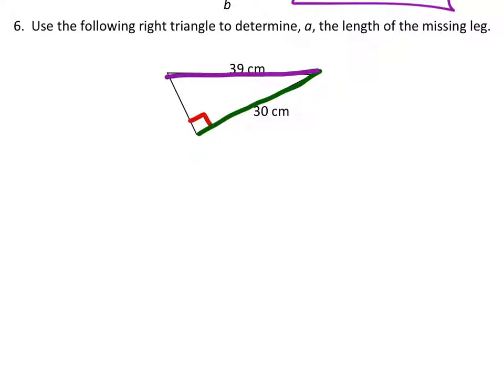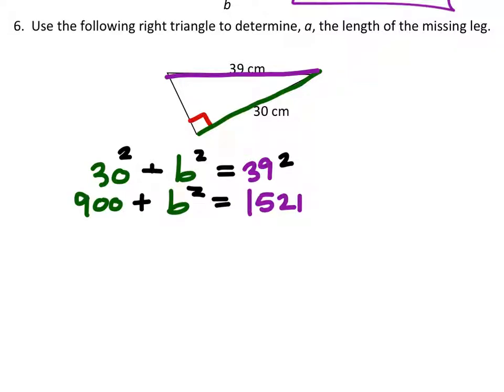So setting this up, we got 30 squared plus B squared equals 39 squared. Now let's just go and evaluate 30 squared and 39 squared. And we get 900 and 1,521, respectively.